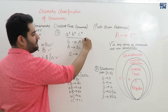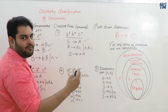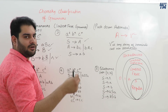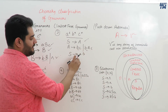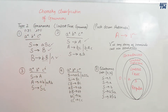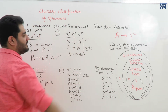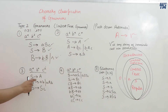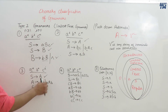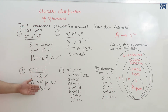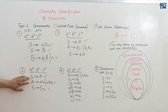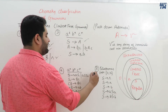For a^i b^n c^n: S derives A is valid, A derives BC or BAC is a combination of terminals and non-terminals, S derives AS is also a valid combination — so this grammar is also context free. For a^n b^n c^i: S derives A is valid, A derives AB or AAB is valid, S derives SC is valid — all are combinations of terminals and non-terminals, so this is also a context free grammar.